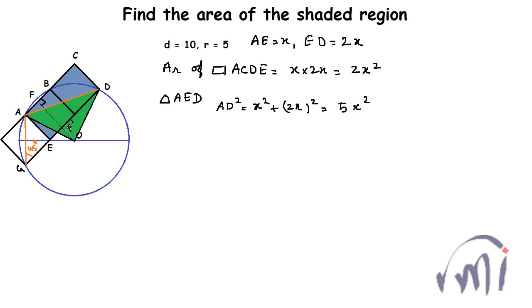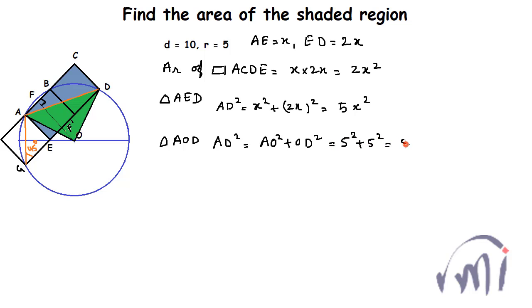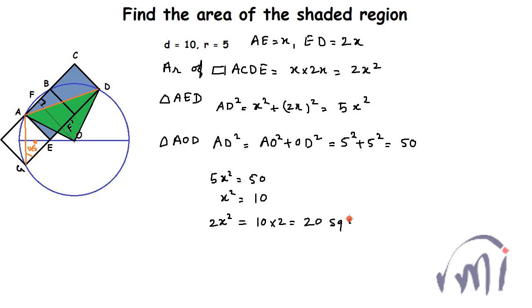From triangle AOD, AD² equals AO² plus OD², and since both AO and OD are radii of the circle, AD² equals 5² plus 5², which equals 50. Therefore 5x² equals 50, so x² equals 10, and 2 times x² equals 20 square units — that is the area of this rectangle.